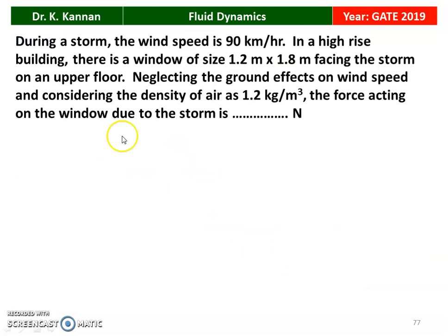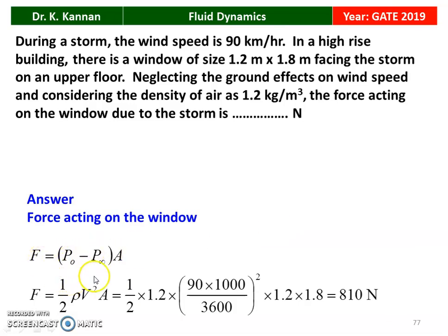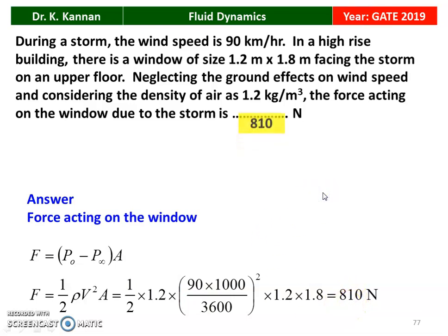Next question from the 2019 question paper. During a storm, the wind speed is 90 km/h. A window of size 1.2 m × 1.8 m faces the storm. Neglecting ground effect, with air density 1.2 kg/m³, the force on the window is: F = ½ρV²A = ½ × 1.2 × (90 × 1000/3600)² × 1.2 × 1.8 = 810 Newton.